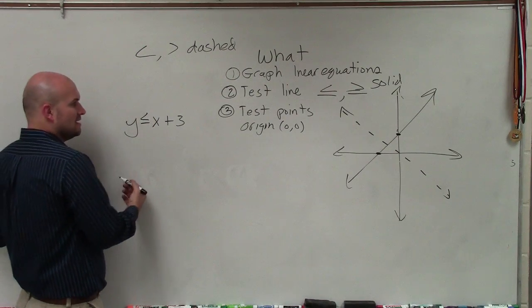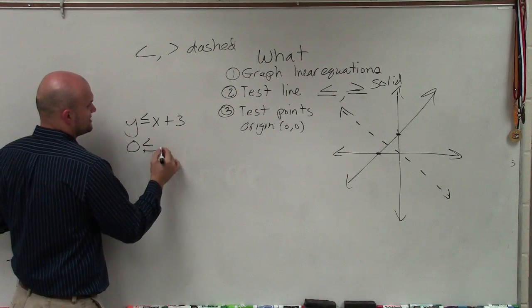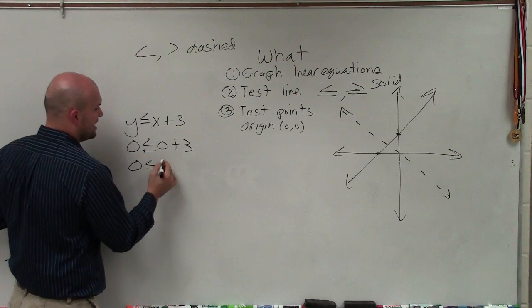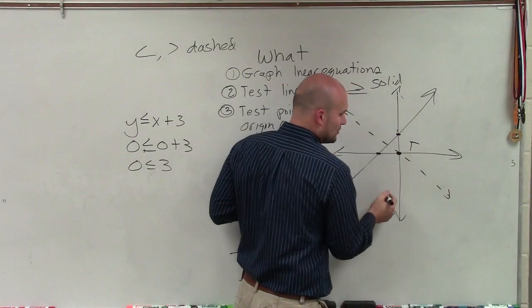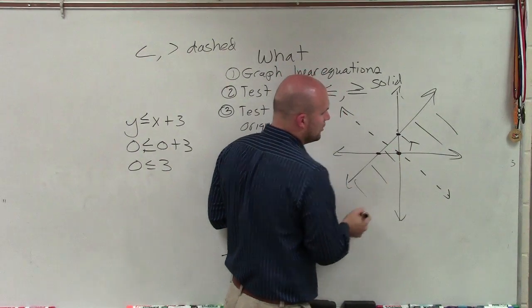Now, to test this, basically all I'm going to do is plug in 0, 0, 0 for y, and 0 in for x. And if it makes the equation true, which in this case it does, then I know my test point here is true. So therefore, this solid line, I would shade all the points below the solid line.